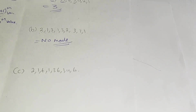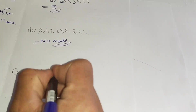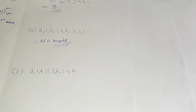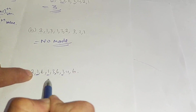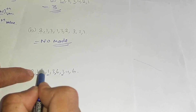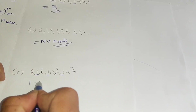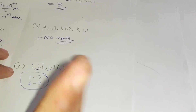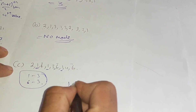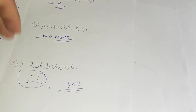Last example: 2, 1, 6, 1, 3, 6, 1, 4, 6 — number 1 repeats 3 times and number 6 also repeats 3 times. Both are repeating equally, so we have two modes: 1 and 6. Please leave a like and thank you so much.